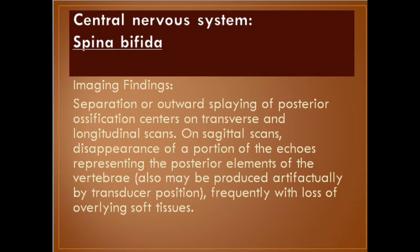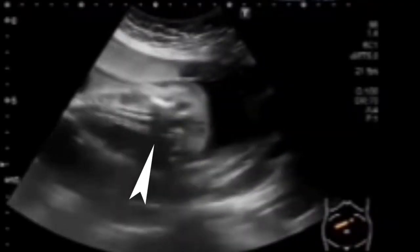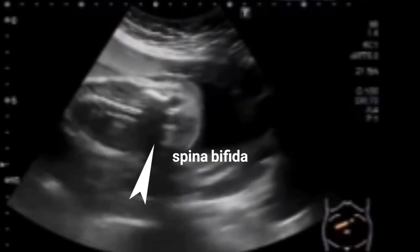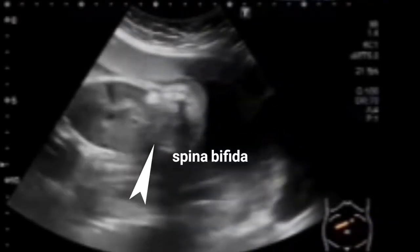Imaging findings: separation or outward splaying of the posterior ossification centers on transverse and longitudinal scans. On sagittal scans, disappearance or abortion of the echoes representing the posterior elements of the vertebrae, frequently with loss of overlying soft tissues.